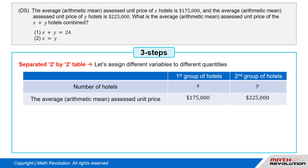Number of first group hotels: X. Number of second group hotels: Y. The average or arithmetic mean assessed unit price of the first group of hotels: $175,000. The average or arithmetic mean assessed unit price of the second group of hotels: $225,000.